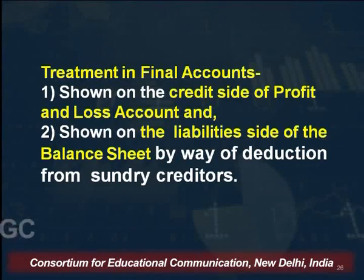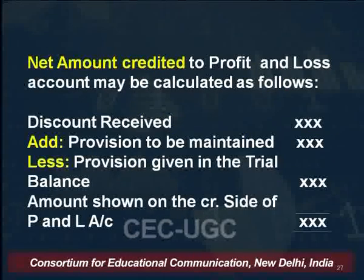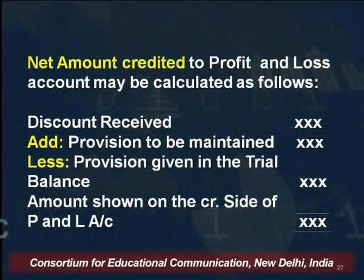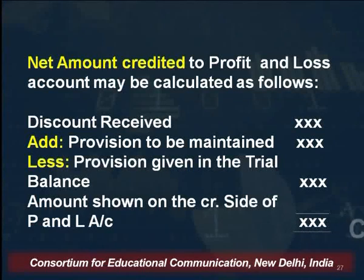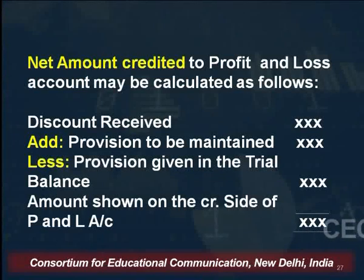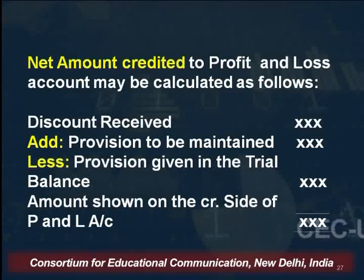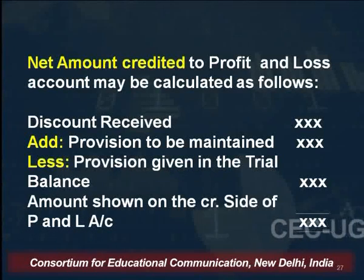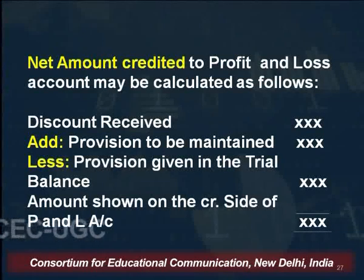Provision for discount on creditors is shown on the credit side of the profit and loss account. The other effect is that it would be shown on the liability side of the balance sheet by way of deduction from sundry creditors. The net amount credited to profit and loss account is calculated as: if discount received is already given in the question, then: discount received plus new provision to be maintained less provision already given in the trial balance.